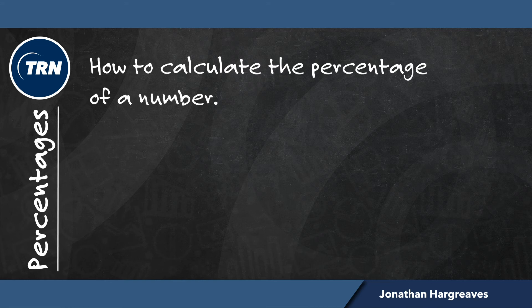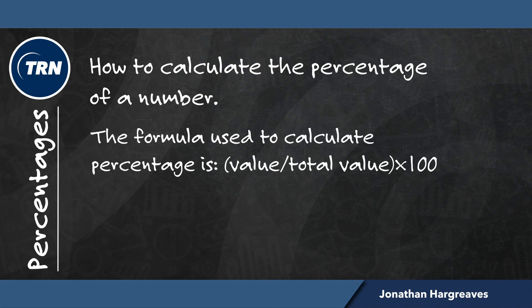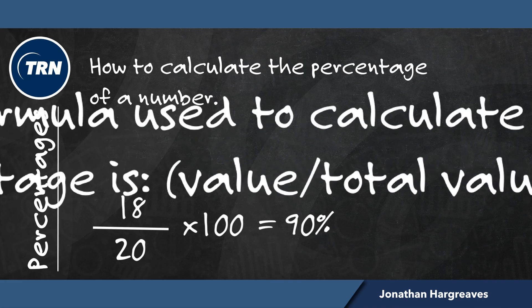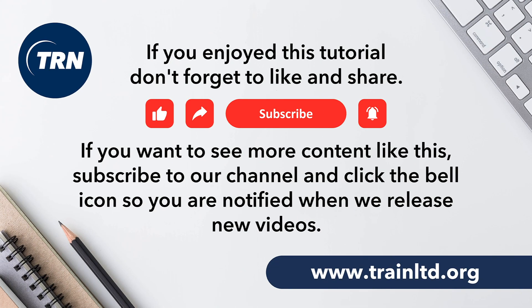And finally let's look at calculating the percentage of a number. What we do is take the number to be expressed as a percentage, divide by the total, and multiply by 100. So for example, if we were doing a test and the marks were out of 20 and we scored 18, we write 18 over 20. Don't forget — a percentage is always recognized as over a hundred. In this case we multiply by 100 and our answer is 90%.